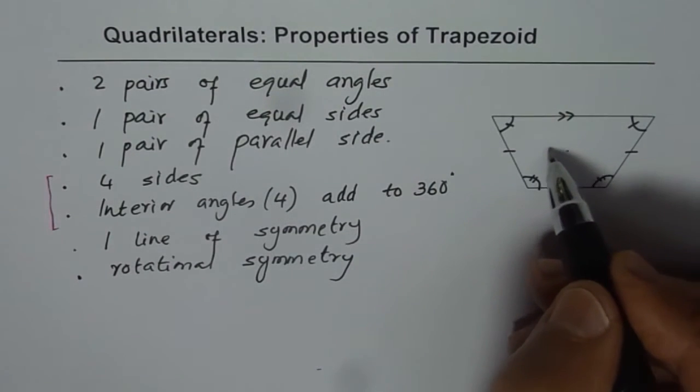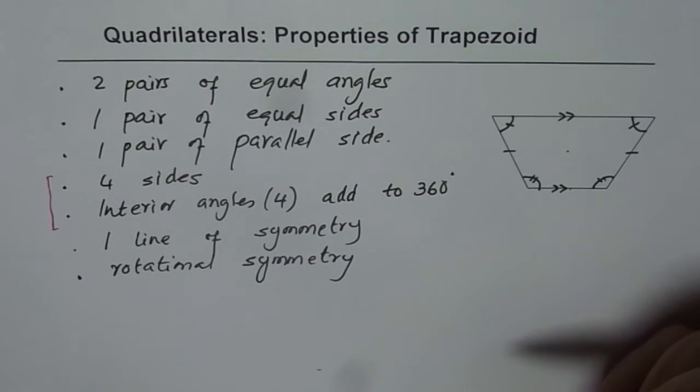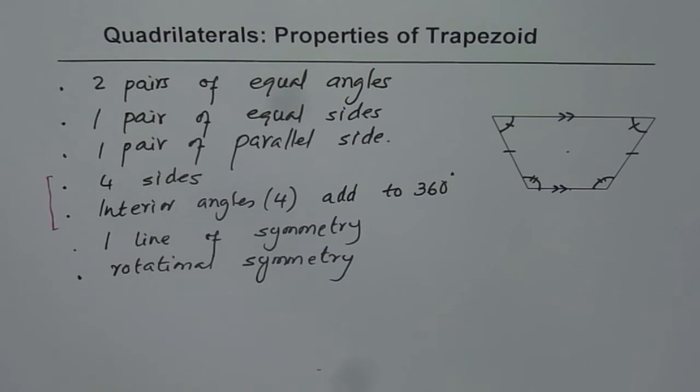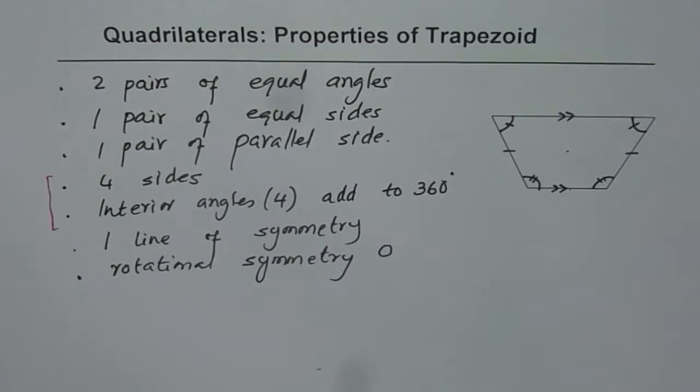If I rotate it 180 degrees, then this smaller side comes on the top. So that is not similar. So rotational symmetry for this particular figure is zero. It does not have any rotational symmetry. And it has one line of symmetry.